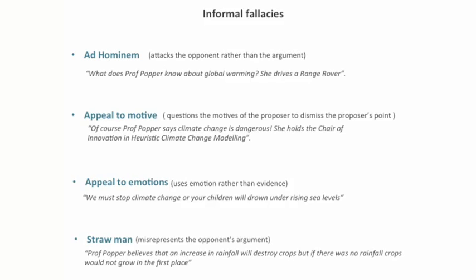Another example of informal fallacy is the appeal-to-emotion fallacy, which uses emotion rather than evidence. For instance: 'We must stop climate change, or your children will drown in the rising sea levels.' And finally, the straw-man fallacy misrepresents the opponent's argument. For instance: 'Professor Popper believes that an increase in rainfall will destroy crops. But if there was no rainfall, crops would not grow in the first place.'